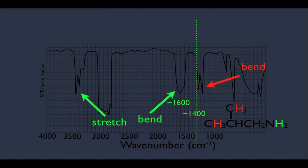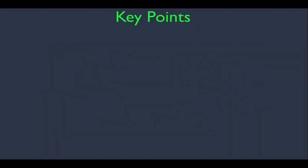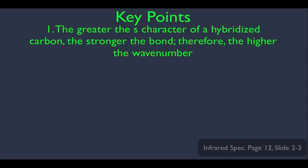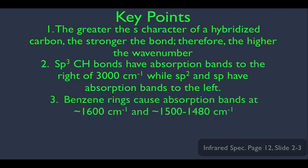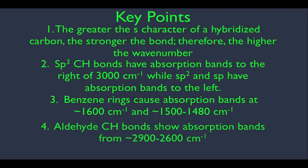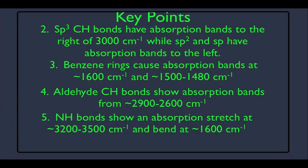So there we have it — CH bonds in a bit more detail. To summarize our key points: one, the greater the S character of a hybridized carbon, the stronger the bond and the higher the wave number on the IR. Two, SP3 CH bonds have absorption bands to the right of the 3000 mark, while SP2 and SP are to the left. Three, benzene rings typically show absorption bands at 1600 and around 1480 to 1500. Four, aldehyde CH bonds absorb around 2600 to 2900 — the smallest wave numbers we saw. And five, NH bonds show a stretch near 3200 to 3500 — narrow, unlike OH — and a bend peak at around 1600.